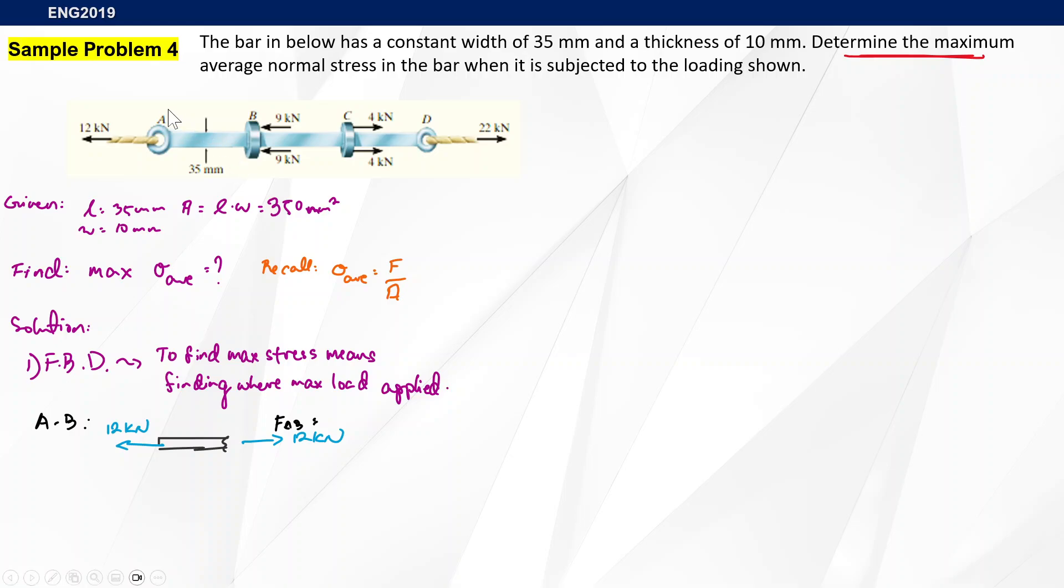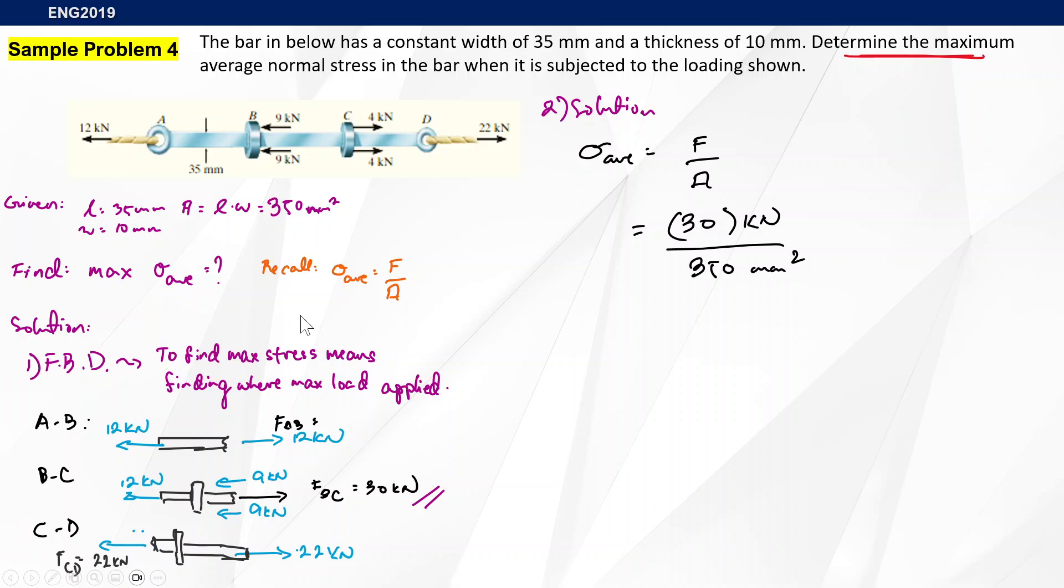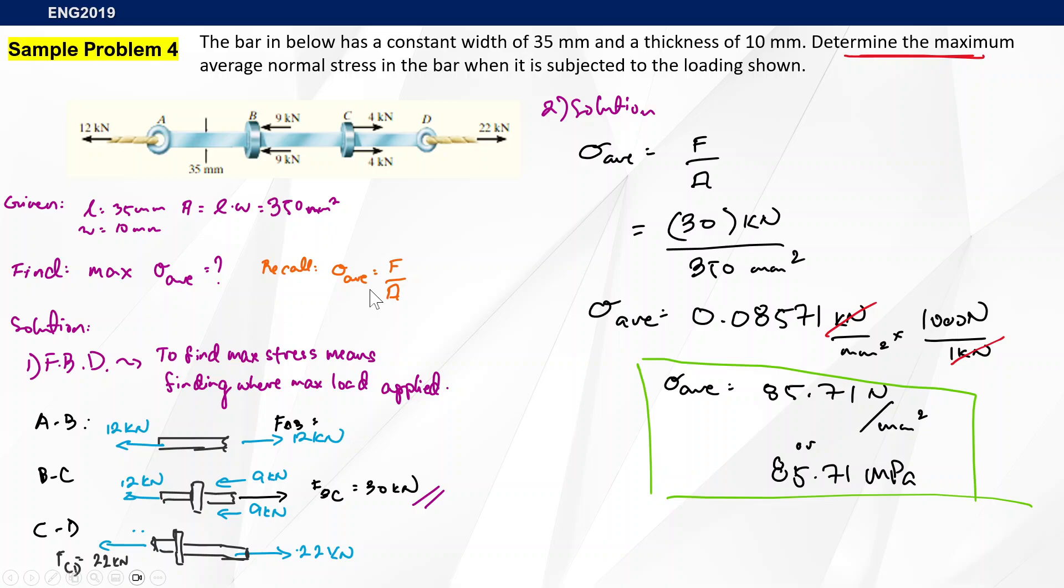For AB we have 12 kilonewtons. For BC we have a combination of 12 kilonewtons and 9 kilonewtons, that's 30 kilonewtons total. Finally, CD is just 22 kilonewtons. The segment with the greatest amount of force is BC at 30 kilonewtons. To get the maximum average normal stress, we substitute 30 kilonewtons and apply the area of 350 millimeters squared. Converting to megapascals, we have 85.71 megapascals.